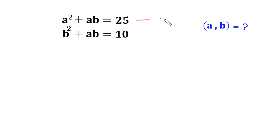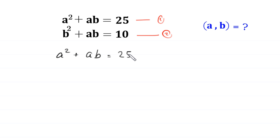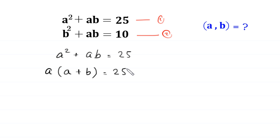Let us call this equation 1 and this equation 2. From equation 1, a squared plus ab is equal to 25. From the left hand side, we can factor out a. So, a as common factor leaves a plus b is equal to 25. Dividing both sides by a, this implies that a plus b is equal to 25 over a.